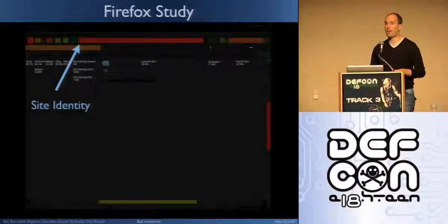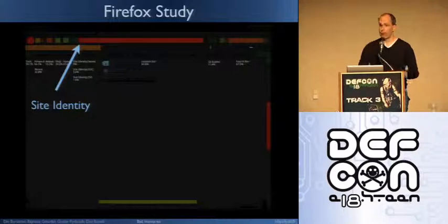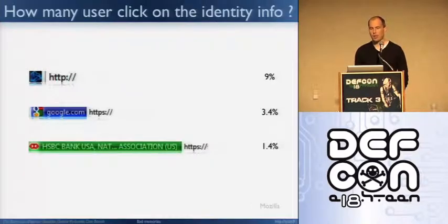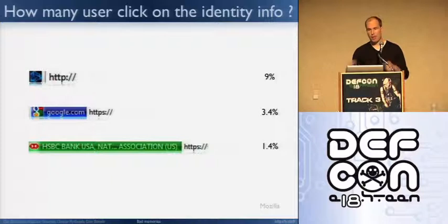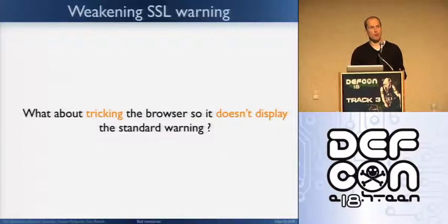A Firefox study for Firefox 4 using a heat map where users are clicking shows that the area showing HTTPS information — no one is clicking on it. So positive warnings don't work well either. The more expensive the SSL certificate becomes, the less people are clicking on it. But it wouldn't be a DEF CON talk if I was just saying trust the user. What about we try to trick the browser into not displaying the warning?